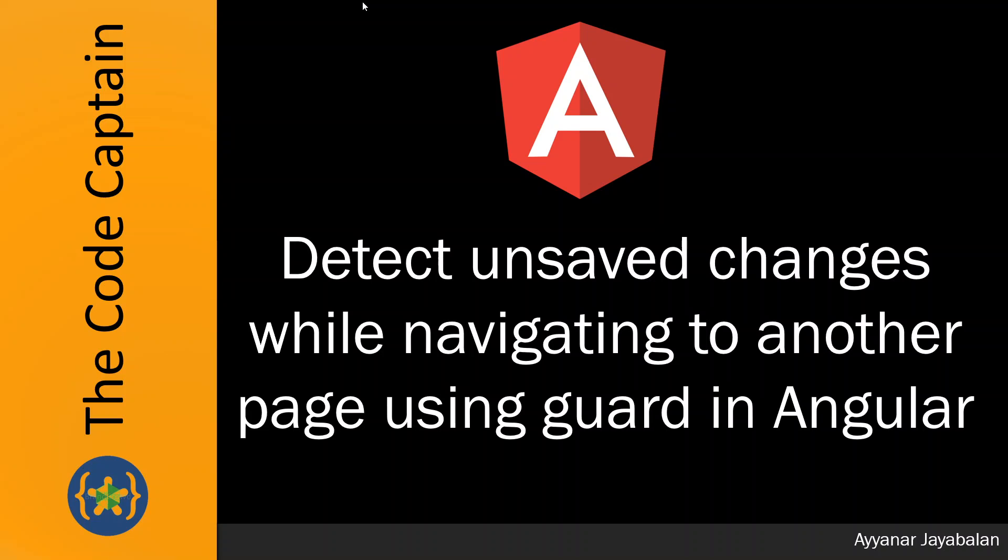Hello viewers, my name is Ayana Jayabagan. In this video we will see how to detect unsaved changes while navigating to another page using a guard in Angular. Basically, if you have a form with input controls like a text box and a save button, and you've typed a value but didn't save and are trying to navigate to another page, those changes will be lost. If you want a confirmation before moving to another page — 'you have unsaved changes, do you want to save?' — this gives a warning to the user before navigating.